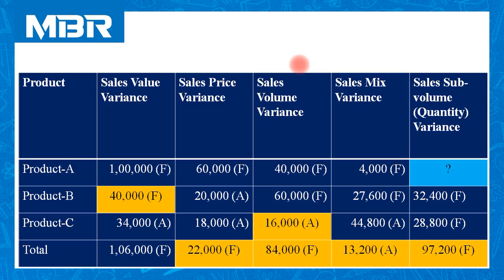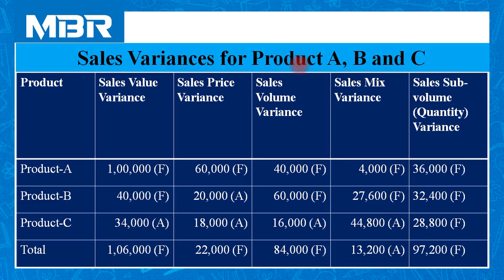From the previous calculation, total sales sub-volume variance is Rs. 97,200 favorable. In the sixth and last column: Product A — not given; Product B — Rs. 32,400 favorable; Product C — Rs. 28,800 favorable. Using the formula: 97,200 = Sub-Volume Variance of A + 32,400 + 28,800. Therefore, sales sub-volume variance for product A = Rs. 36,000 favorable.